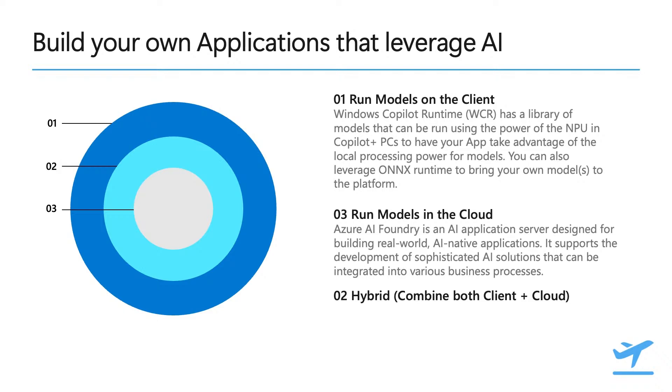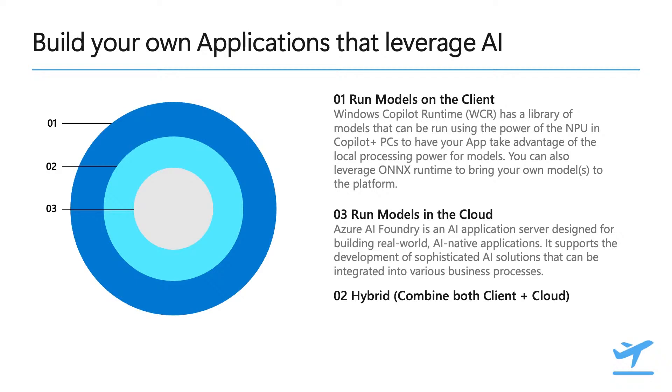For larger, more sophisticated AI tasks, you can actually run models in the cloud. Azure AI Foundry is an AI application server built just for this — a great way for developing applications that start with really complex or large language models or things that need a huge amount of compute. And even better, you can combine the two. A lot of our AI in the future is going to be headed toward a hybrid situation where we are doing some things on the client and some things on the cloud, leveraging both low latency with good user context as well as the larger processing power in the cloud. I highly recommend checking out both WCR, ONNX Runtime, and Azure AI Foundry.